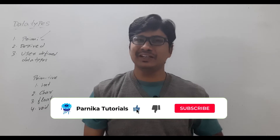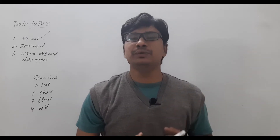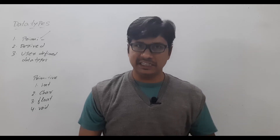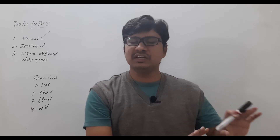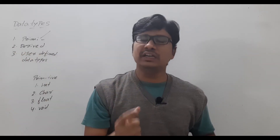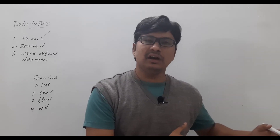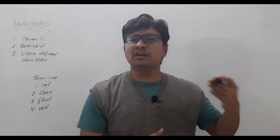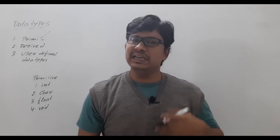Good morning friends, welcome back to Pannika's tutorials. In the last video I discussed the purpose of data types, how they are broadly classified into three types: primitive data types, user-defined data types, and derived data types. Primitive data types are further classified into four types: int, float, char, and void. I also discussed short int, long int, memory allocation for 16-bit and 32-bit compilers, range of values, and format specifiers. I request you to go back and watch that video for better understanding.